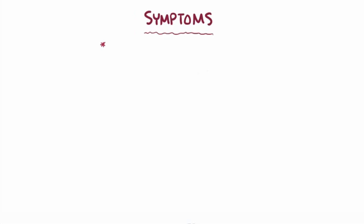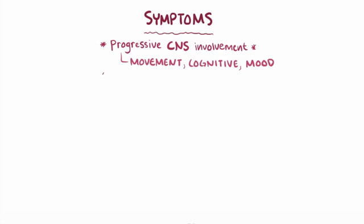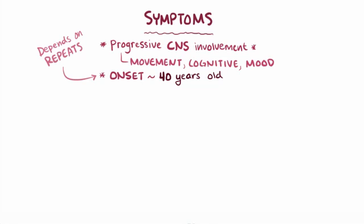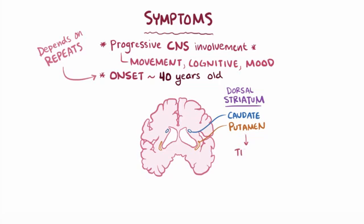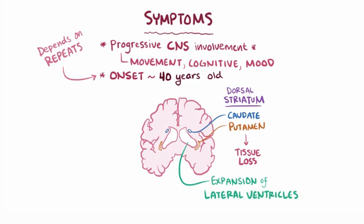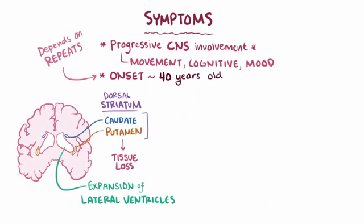The symptoms of Huntington disease involve progressive central nervous system disturbances, including movement, cognitive, and mood symptoms. The average age of onset is around 40 years old, although the age of onset depends on the number of CAG repeats. Over time, if enough neurons die in the caudate and putamen — which together form the dorsal striatum — it can cause actual loss of brain tissue volume in that area and expansion of the lateral ventricles. These areas play an important role in movement, particularly inhibiting it.